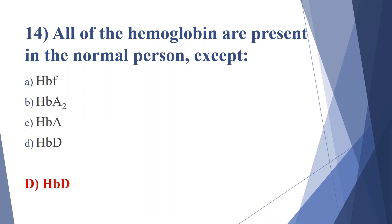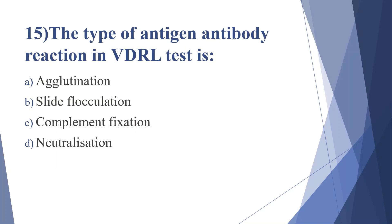Fifteenth question: the type of antigen-antibody reaction in VDRL test is — option A: agglutination, option B: slight flocculation, option C: complement fixation, option D: neutralization. Answer is option B, slight flocculation. VDRL test is used for syphilis.